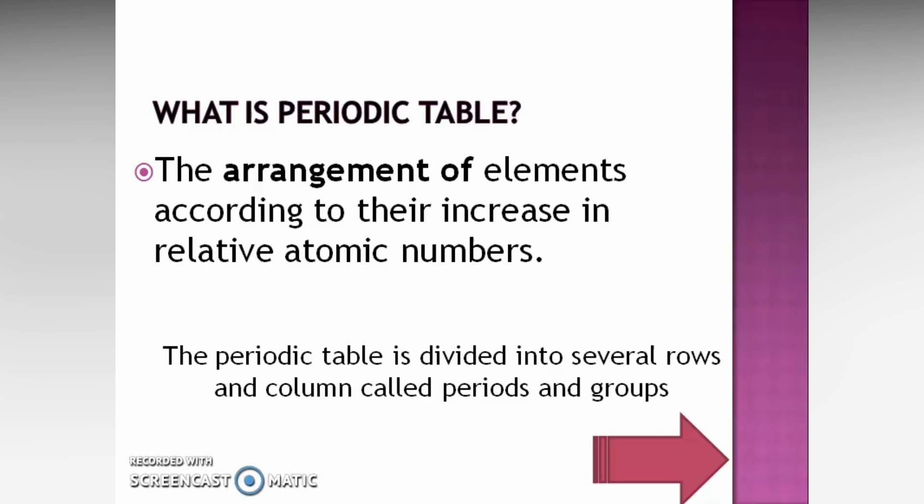Now, what is the periodic table? The periodic table is an arrangement of elements according to their increase in relative atomic numbers. And it has different rows and columns.